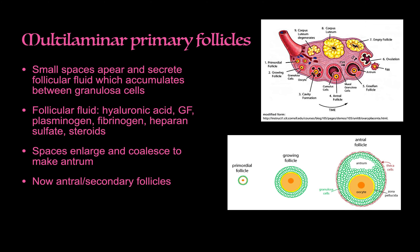Moving on — the multi-laminar primary follicles develop small spaces filled with follicular fluid, which is composed of hyaluronic acid, growth factors, plasminogens, fibrinogens, heparin sulfates, and steroids to aid implantation. These spaces enlarge and coalesce to form an actual cavity called the antrum. These are now called antral or secondary follicles.